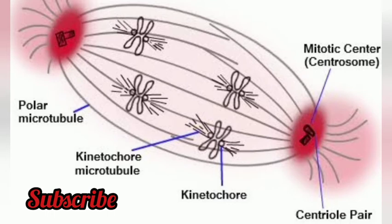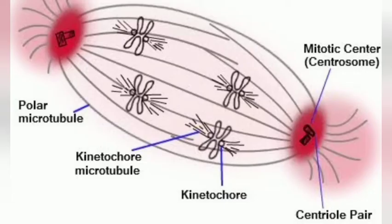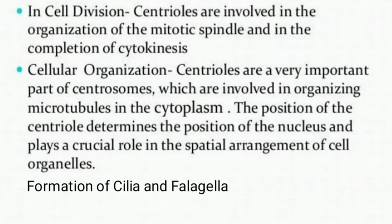Cell division کے شروع ہوتے ہی centrioles divide کرتے ہیں اور cell کے opposite poles کی طرف جانا شروع کر دیتے ہیں۔ Centrioles spindle formation میں اپنا کردار ادا کرتے ہیں اور cell division کے دوران cell furrowing میں مدد کرتے ہیں۔ Cell furrow centrioles کی مدد سے بنتی ہے جس سے cell دو cells میں divide ہو جاتا ہے۔ Centrioles are involved in the organization of the mitotic spindle and in the completion of cytokinesis.